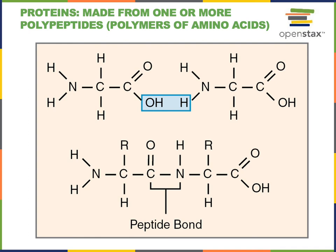A protein is made from one or more polymers, which are known as polypeptides, and each of those polypeptides is a long chain of monomers known as amino acids.